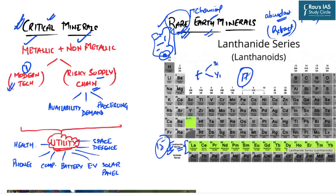The second criterion is that there is a huge risk in their supply chain, as witnessed during the COVID pandemic. There are three primary reasons for this supply chain risk: one, lack of availability, as these minerals are difficult to extract from ores; two, growing modern industries creating huge demand that cannot be met simultaneously across all regions; and three, processing these minerals requires enormous capital, technology, and skilled labor. These two factors — utility in modern technology and supply chain risk — make a mineral critical.